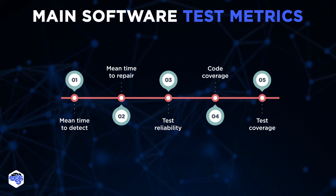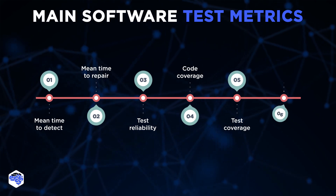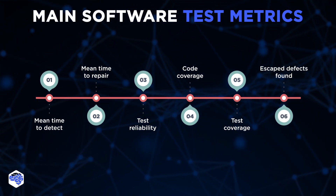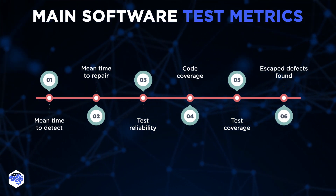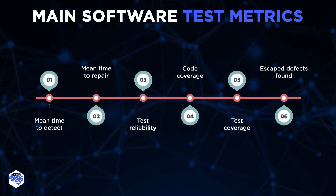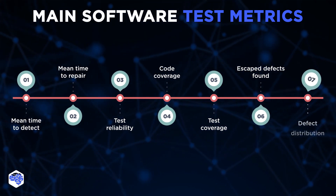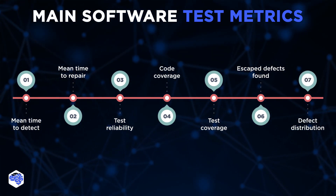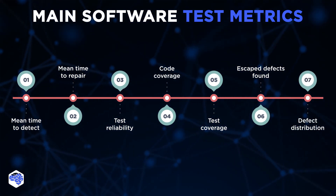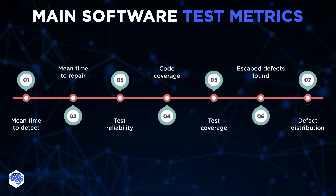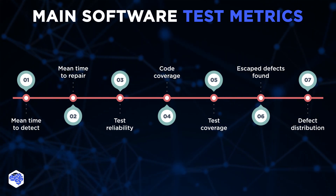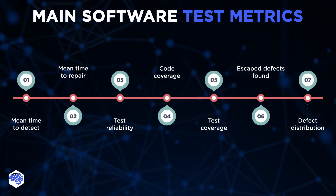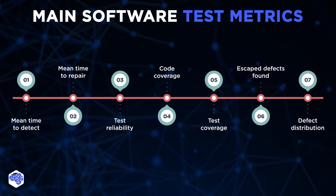Not only unit tests. Escaped defects found shows the number of defects found in production. The final metric is defect distribution, where we assess bugs according to different criteria: severity, area of the application, testing type, etc.